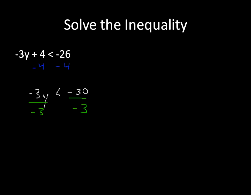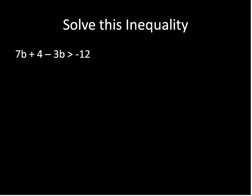Now in this step, we're going to divide by negative 3, and this is when that rule comes into play. We're dividing by a negative number — negative 3 — so the negative 3s cancel out, leaving just y on this side. Negative 30 divided by negative 3 gives us positive 10, and we have to switch our sign. So y has to be greater than 10. Anything greater than 10 will give us a true statement, and we can verify that.